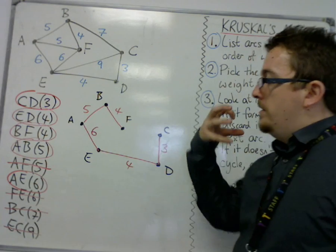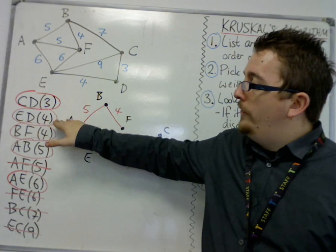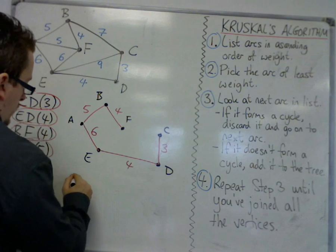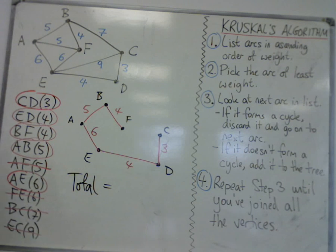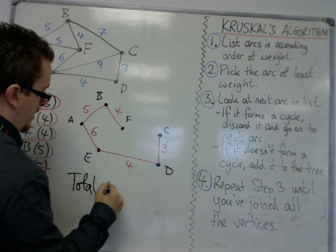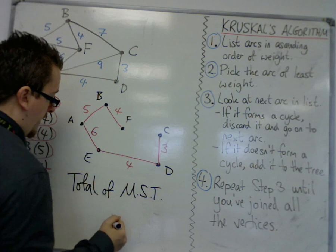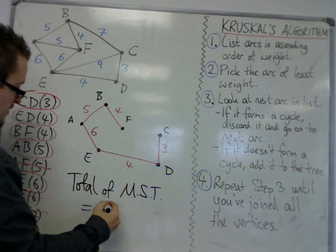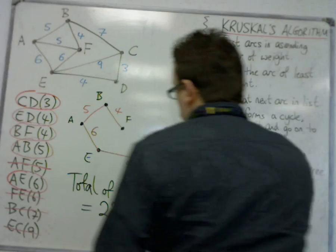So this is the necessary notation that you have, making it clear which ones you've picked and which ones you've discarded. We'll also want to work out what the total is of the minimum spanning tree. So total of minimum spanning tree, which is often abbreviated to MST, is 3 plus 4 plus 4 plus 5 plus 6. So that's 7, 11, 16, 22. And that is the total of the minimum spanning tree.